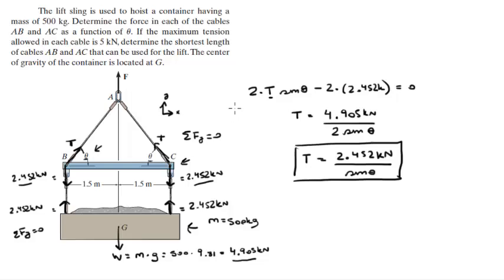So let's call this part A, because that's the first thing the problem asks us. The second thing is, if the tension allowed in each cable is 5k, then determine the shortest length that the cables can be. In other words, how small can theta go? Let's call that part B.